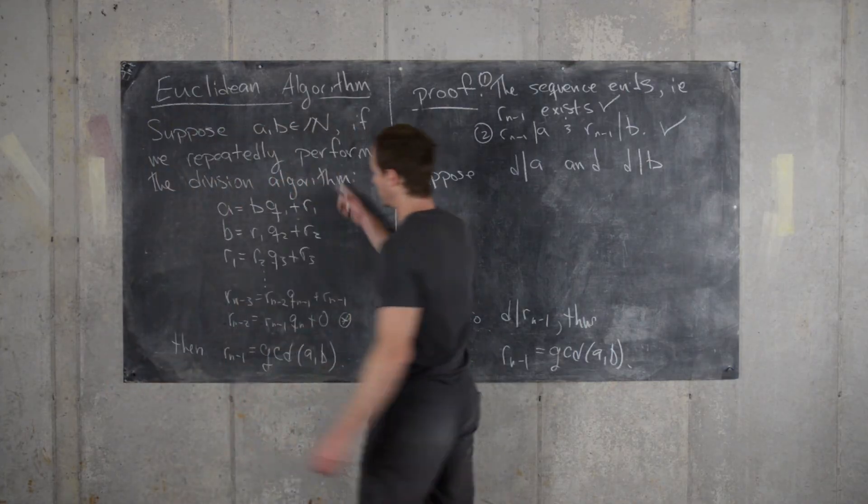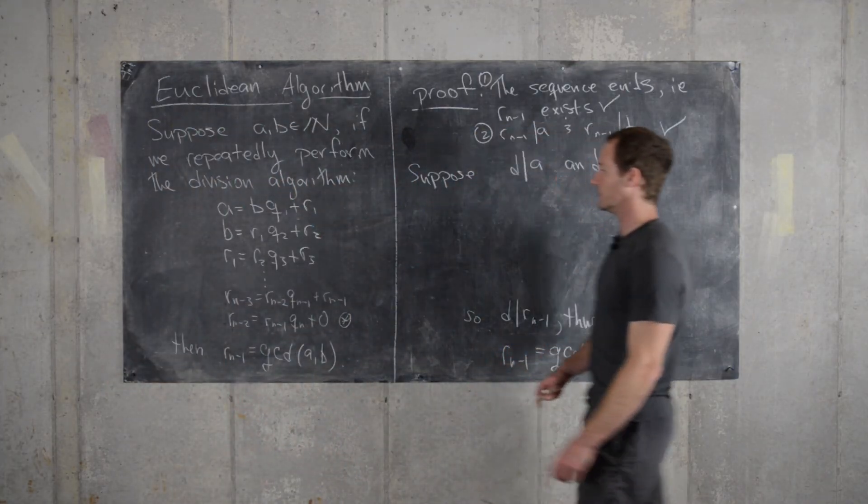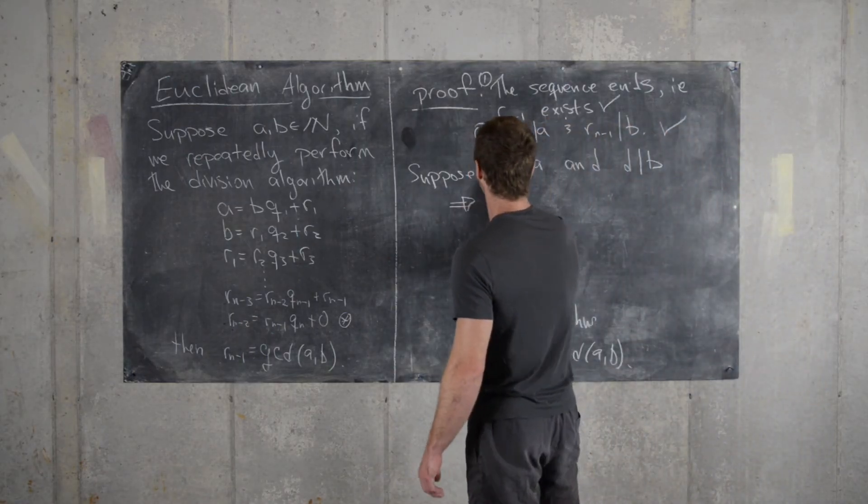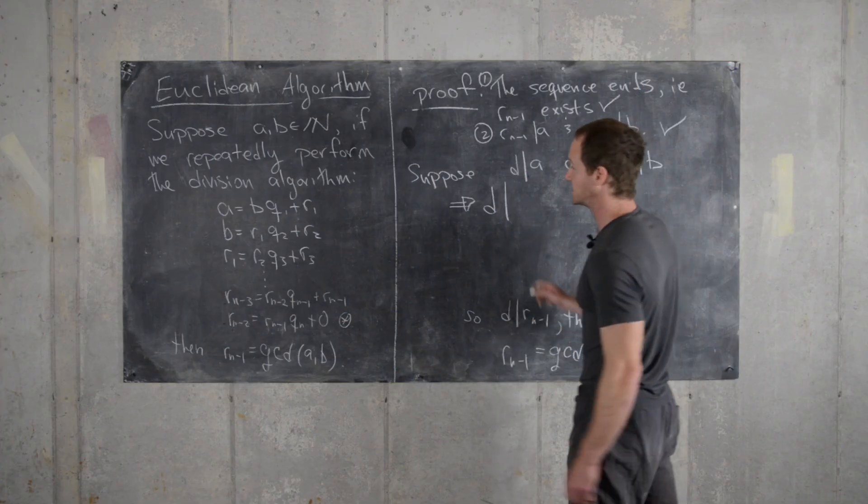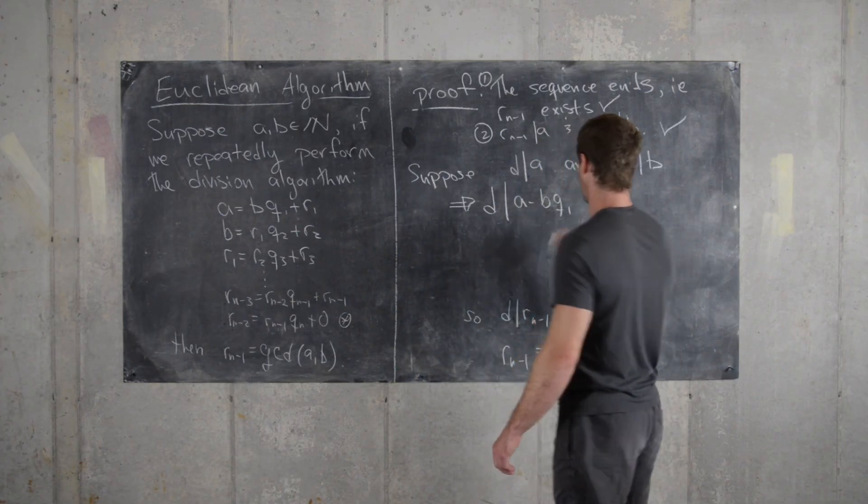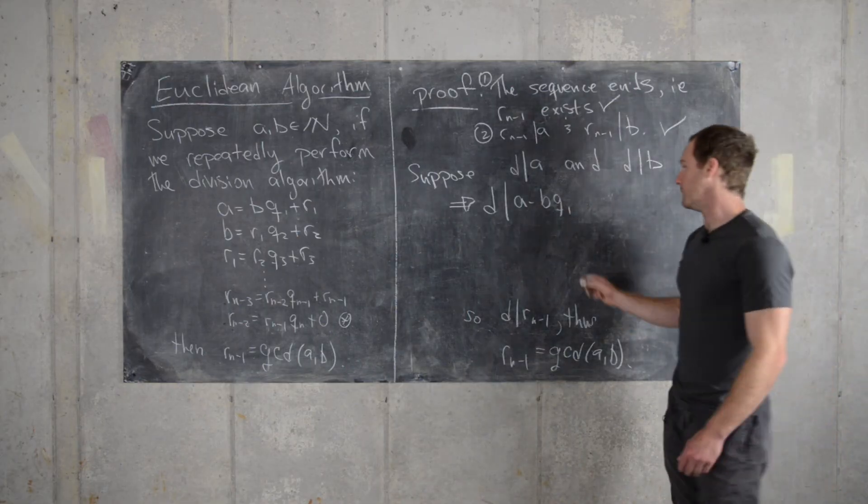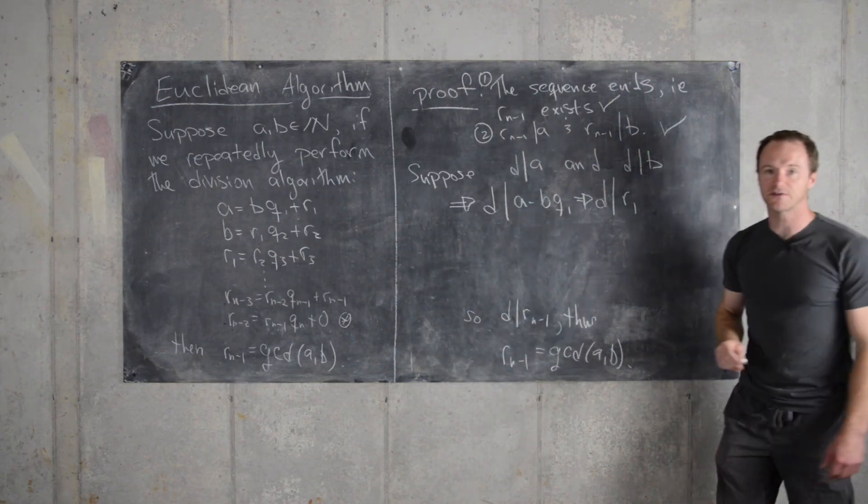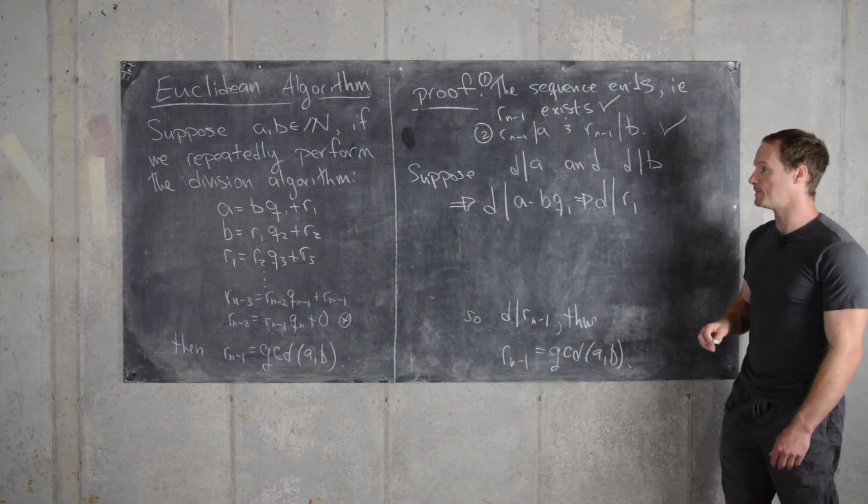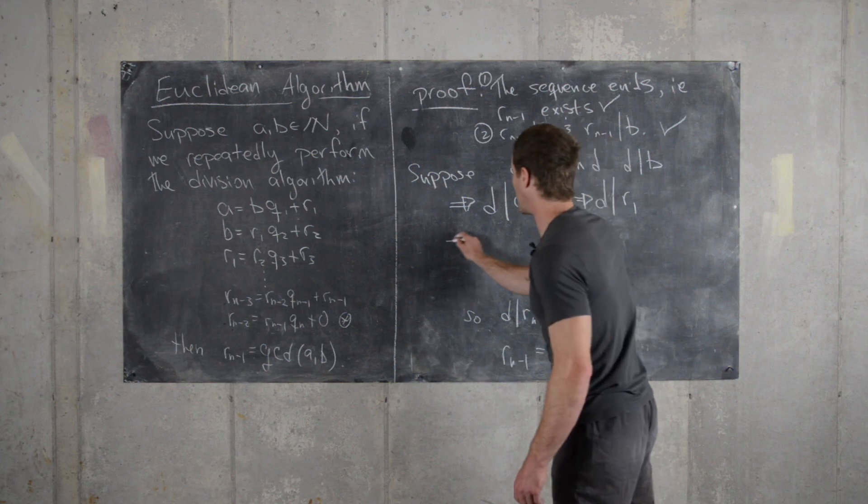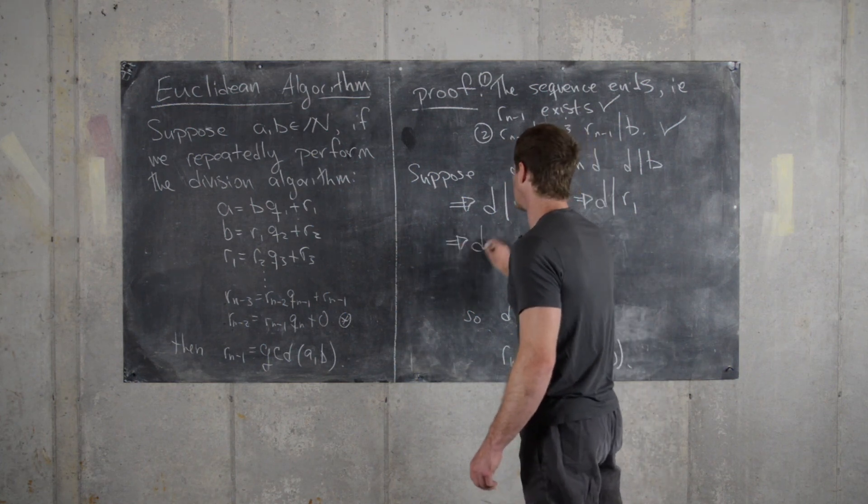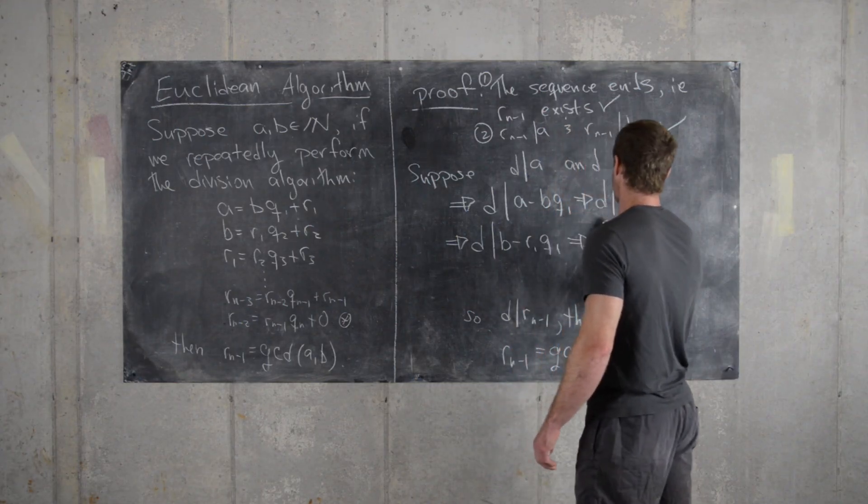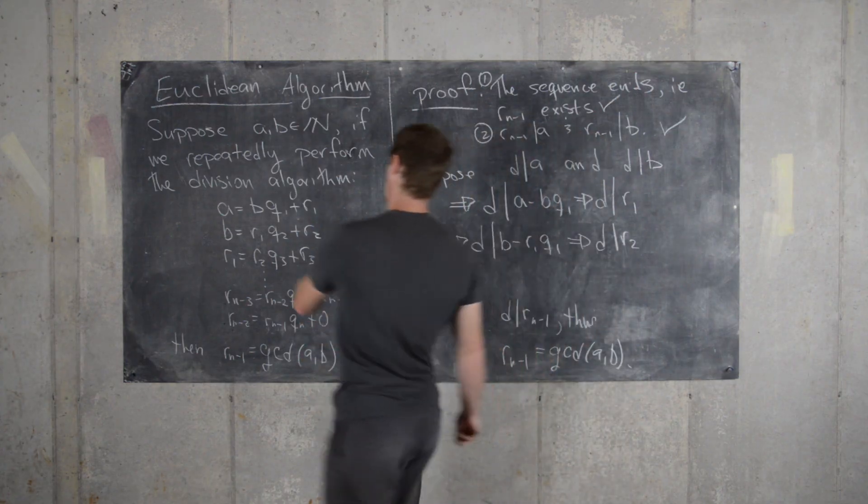And so we'll do that by this sequence of equations that we've built. So if D divides A and D divides B, that means that D divides A minus B times Q1. But that's the same thing as saying D divides R1. So D divides the first non-zero remainder. But that implies that D divides B minus R1 times Q2. But that means that D divides R2 by this equation.